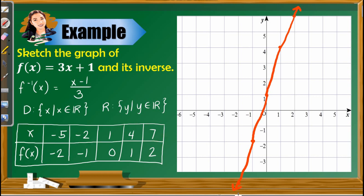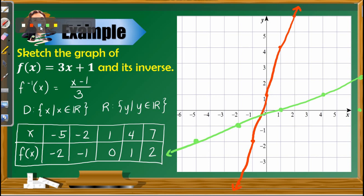Let's now plot these points on the Cartesian coordinate plane: (−5, −2), (−2, −1), (1, 0), (4, 1), and (7, 2). Connect all the dots and extend. Here is the graph of our inverse. Looking at these two graphs, let us see if they are symmetrical with respect to our identity function.